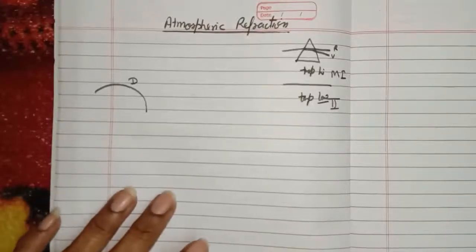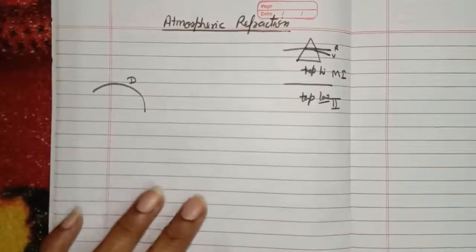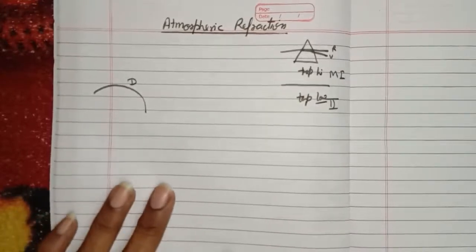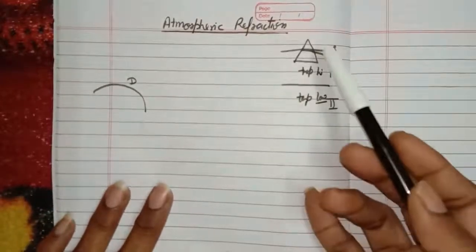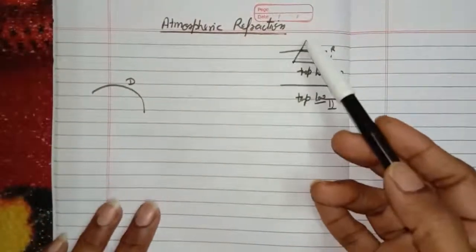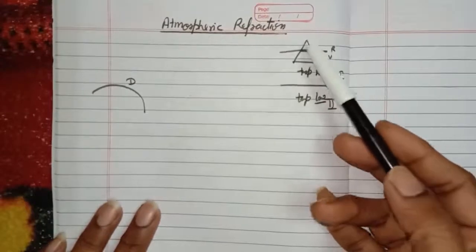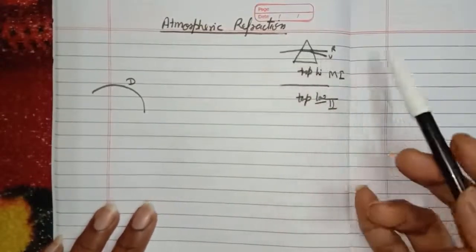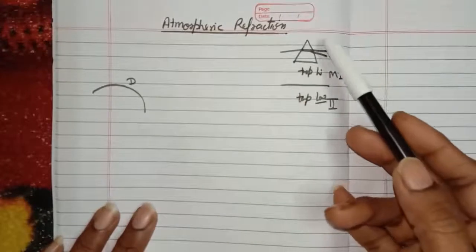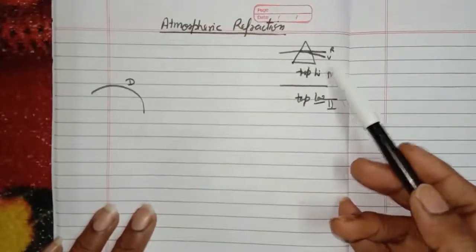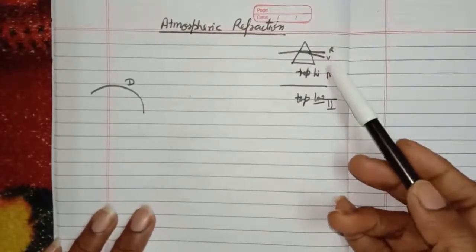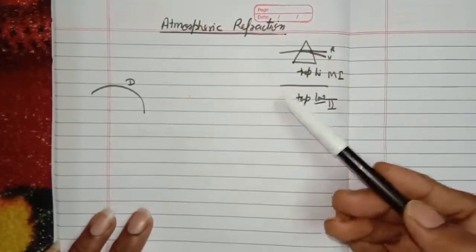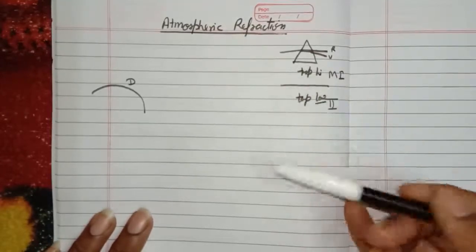Good morning students. In the chapter 'Human Eye and the Colorful World', we understand how the dispersion of light takes place when it passes through a glass prism. When light passes through this prism, it disperses into its seven colors — the spectrum of white light known as VIBGYOR — and we understand how rainbow formation takes place.